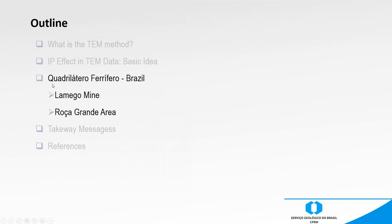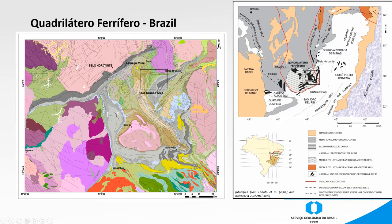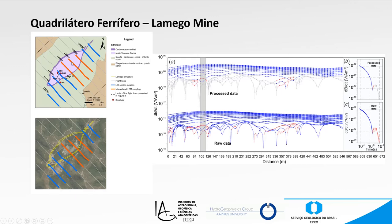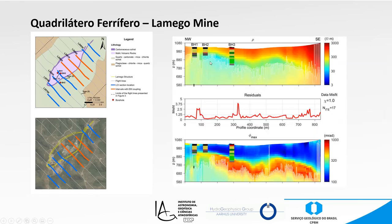Our data is in the Quadratura Ferri-Ferro area, the central part of Minas Gerais State — here is Belo Horizonte. We're going to focus on a very important gold mine in the area, the Lamego mine, and a structure called Rosa Grande. The data over the Lamego structure shows negative transients represented in red in the late times, which occur over the structure. The inversion recovers a conductor close to these boreholes, and the polarization information recovered very strong polarizable bodies associated with this gray lithology — carbonaceous shales — which are very important for the structural control of the gold mineralization.